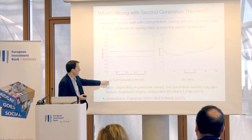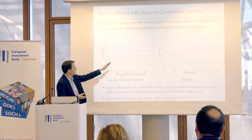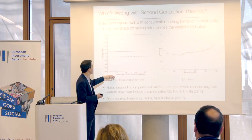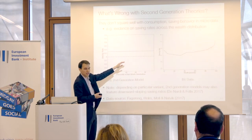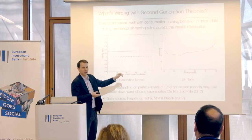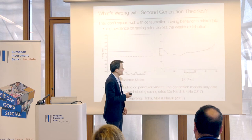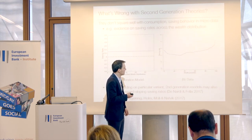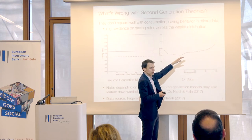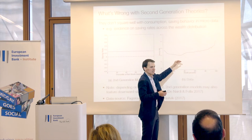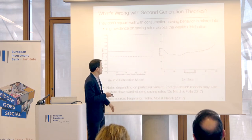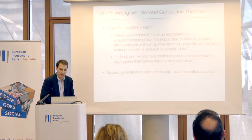There's a similar fact about savings rates. In second generation models, savings rates are roughly constant across the wealth distribution. In the data — this is from some recent work of mine using Norwegian administrative data — you actually find that on the right-hand side of the wealth distribution, savings rates are increasing: richer people save a larger fraction of their income. At the bottom, savings rates are actually decreasing. The two just don't square.